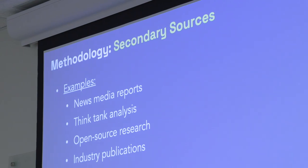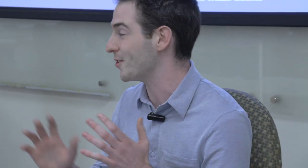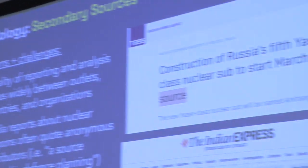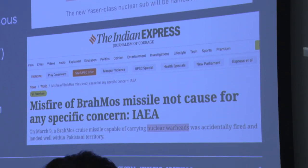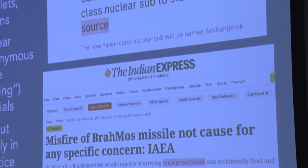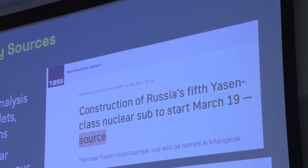Secondary sources include news reports, think tank analysis, open source research, and industry publications — all useful, but they come with big caveats. First is quality of reporting. There are a lot of different standards for how to report on nuclear weapons across different countries. You need media literacy skills to know which publications you can trust. News agencies close to the defense industry, like TASS in Russia, will just say 'a source says this' — you don't really know if it's true, who they're talking about, or why they're saying it.